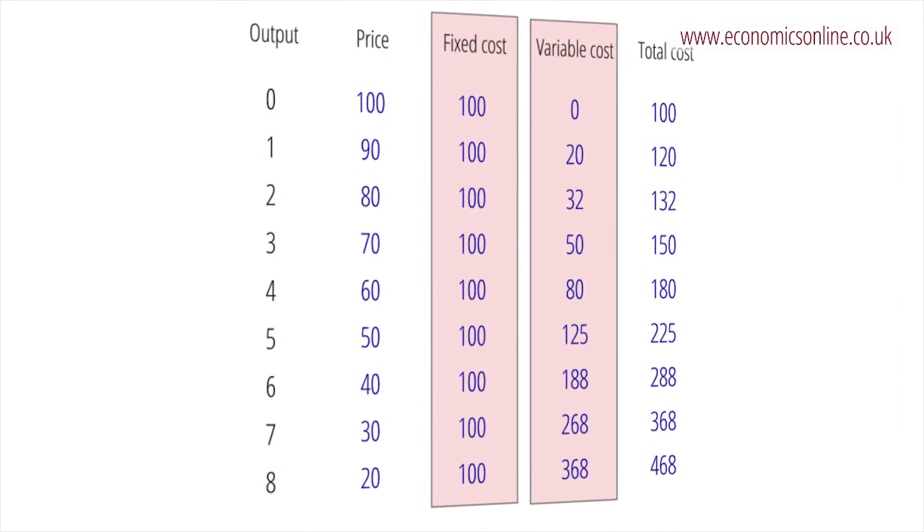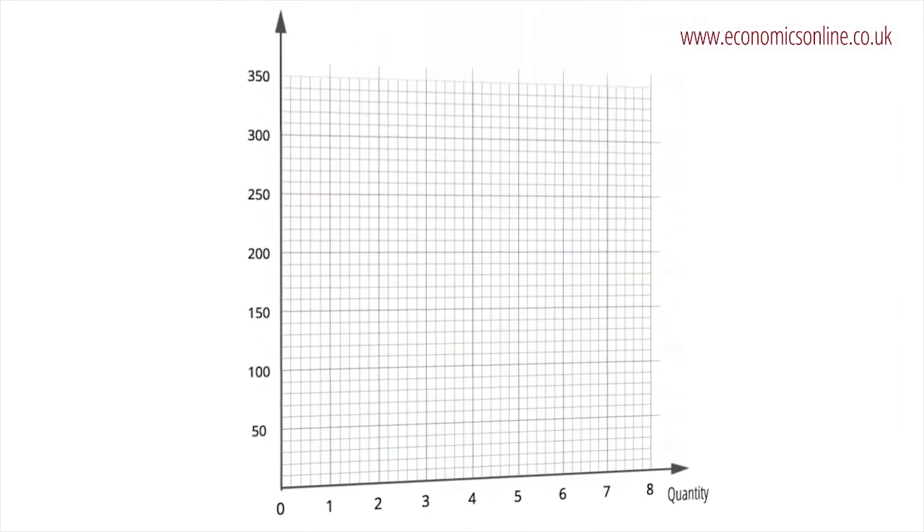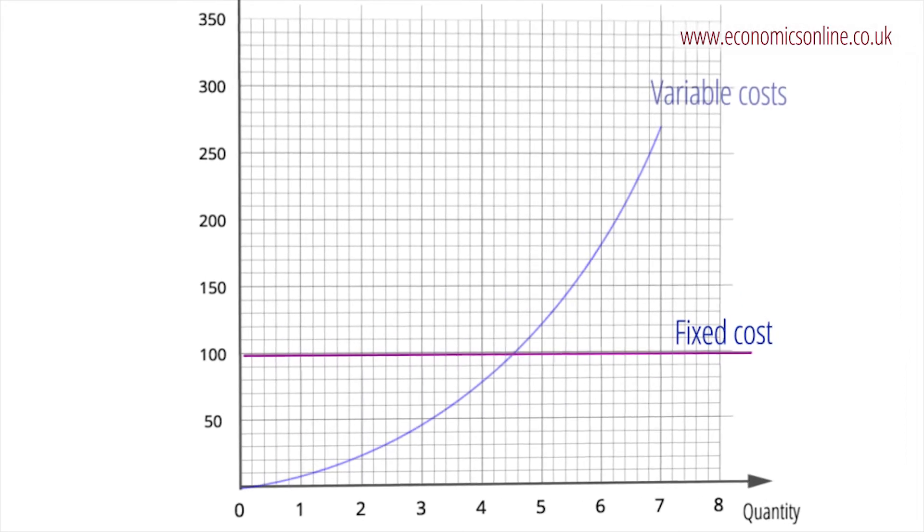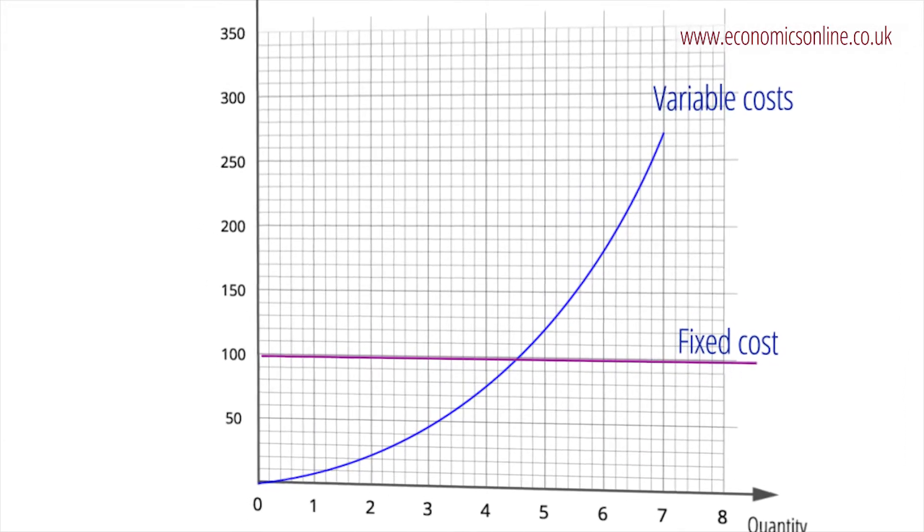Graphically, the fixed cost curve is a horizontal line. In contrast, the variable cost curve slopes up at an accelerating rate, reflecting the impact of the law of diminishing marginal returns.